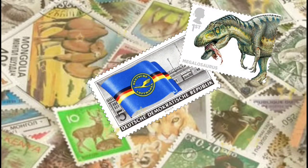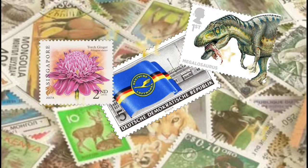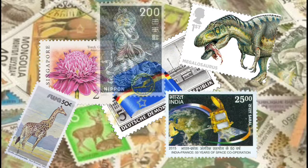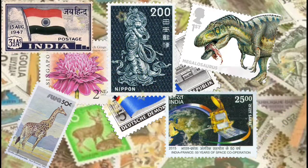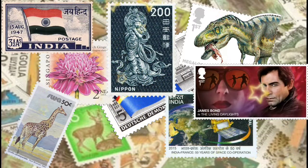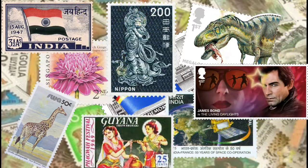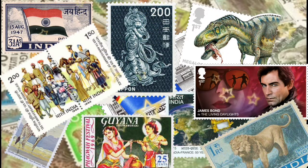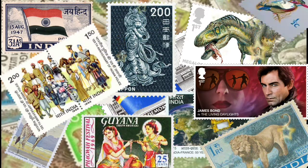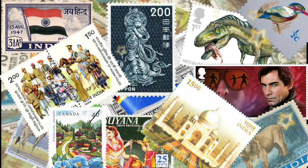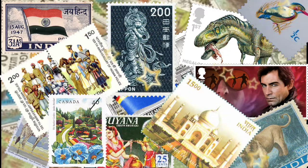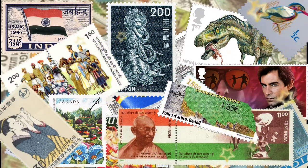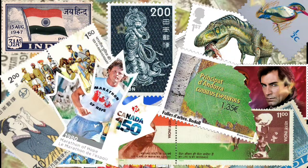Thematic philately is the art of collecting postage stamps, poster stationery, postmarks, and other related philatelic material to illustrate a theme. A thematic collection will generally consist of a wide range of philatelic material from a wide range of countries. The collection should be organized in such a way that it tells an interesting story.